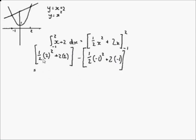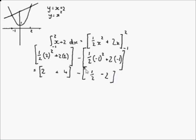2 squared is 4 times a half, which is 2, plus 2 times 2 which is 4, giving 6. Minus: minus 1 squared is 1 times a half, so a half, and 2 times minus 1 is minus 2 — so a half minus 2 equals minus 3 over 2, or minus 1.5. So now you have 6 minus minus 1.5, which equals 7.5.